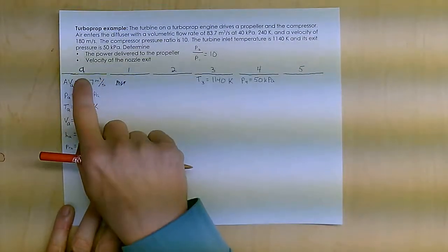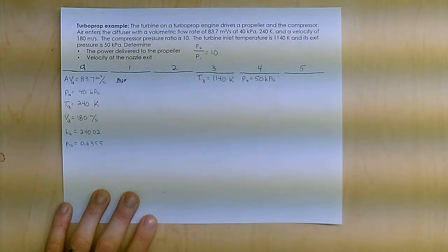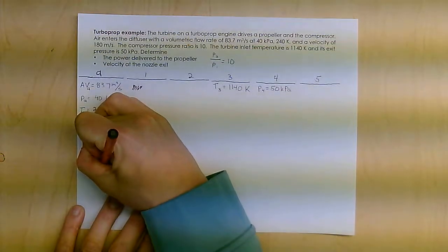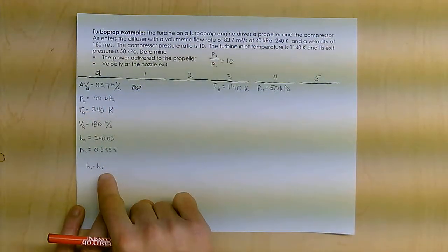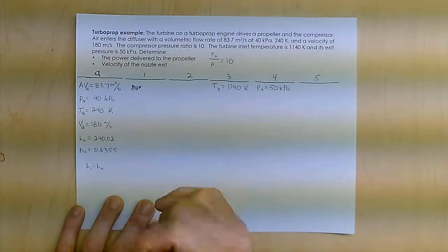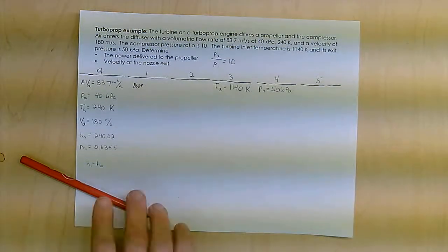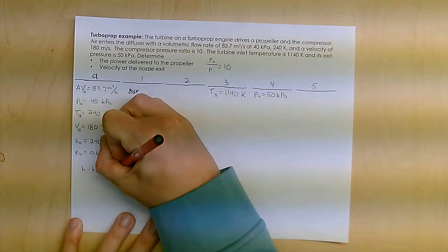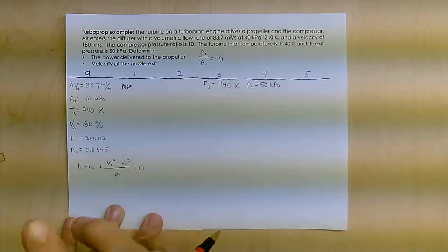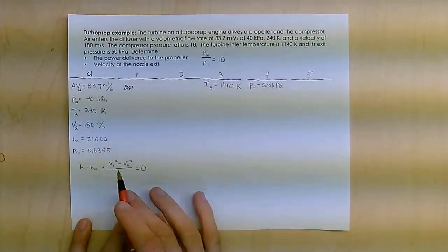This is the diffuser going from A to 1. So what I have here is my energy, my first law equation essentially is H1 minus HA, the change in enthalpy, is going to equal plus V1 squared minus VA squared all over 2 equals 0. So that's my first law equation for this, where the change in enthalpy is essentially the equivalent to the change in kinetic energy.